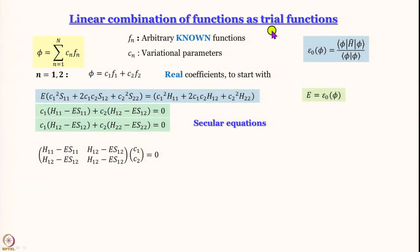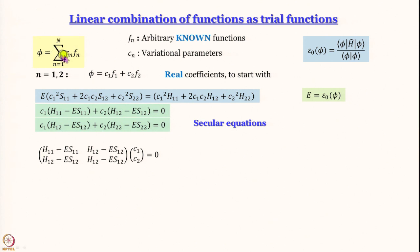It is possible to express trial functions as linear combinations of other functions. In this case we work with fixed functions and use the coefficients as the variational parameters. For example, if we are using Gaussian functions we are not going to change the full-width half-maximum or position of each Gaussian — those parameters will be fixed. The only thing that will change is the coefficient c_n.